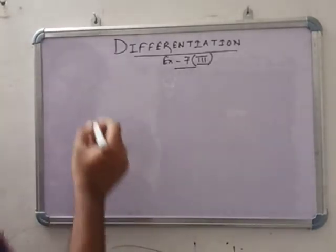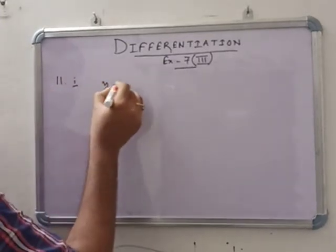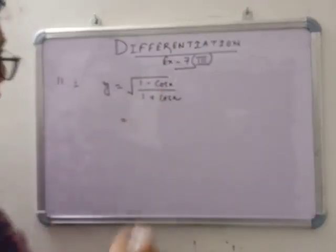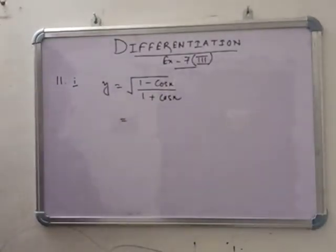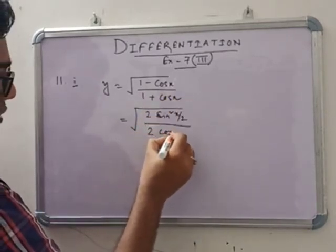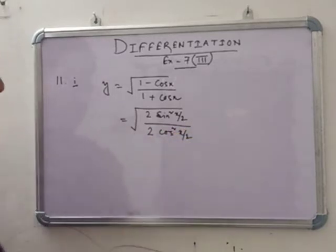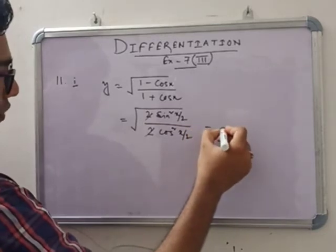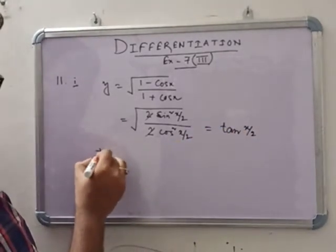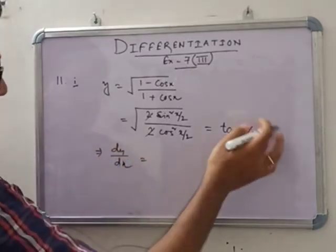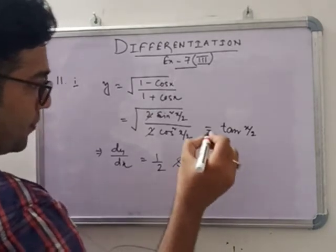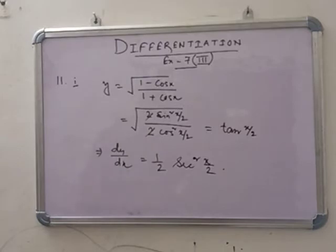In number 11a1, given y = √((1-cos x)/(1+cos x)). Using identities: 1-cos x = 2sin²(x/2) and 1+cos x = 2cos²(x/2). The 2s cancel under the root, giving y = tan(x/2). Differentiating, dy/dx = (1/2)·sec²(x/2).